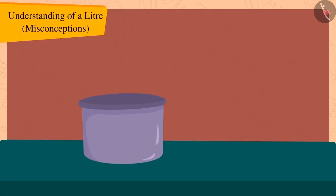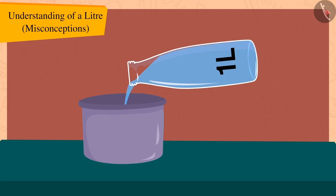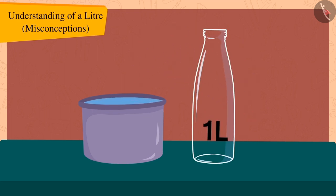Come, let's try it out using more utensils. If we fill this pot with water from this one litre bottle, we will find that the pot is completely filled with this one litre bottle and the bottle is also empty.